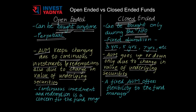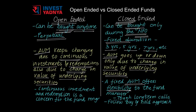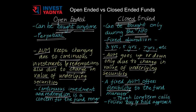In case of closed-ended funds, a fixed assets under management offers a great amount of flexibility to the fund manager. They can take tough long-term calls to satisfy the investment objective of the fund in a better manner. They can invest into undervalued stocks which have lower liquidity and can follow a buy-and-hold approach. In comparison, a variable AUM due to continuous investment and redemption remains a concern for the fund manager of an open-ended fund.